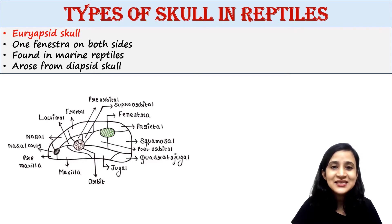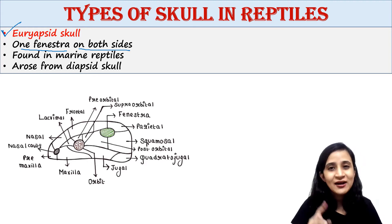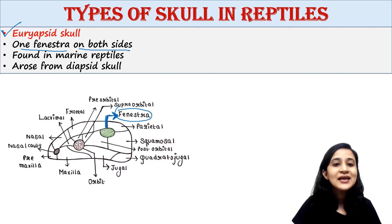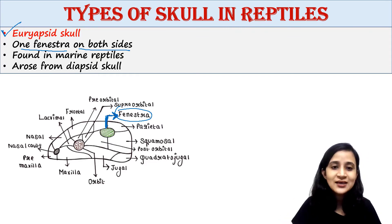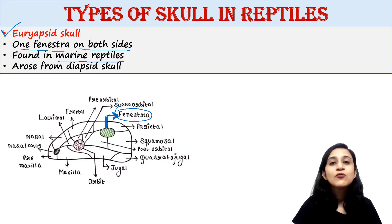The second type is the euryapsid skull. This type of skull possesses one fenestra on both sides of the skull. Here you can see one fenestra — one opening — present on both sides of the skull. Euryapsid skull was found in marine reptiles which are now extinct.